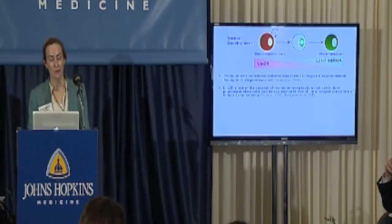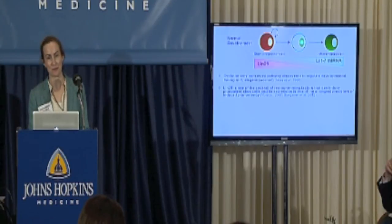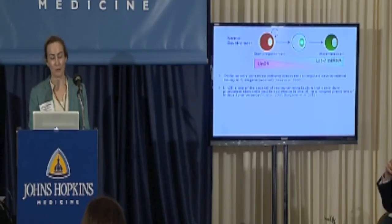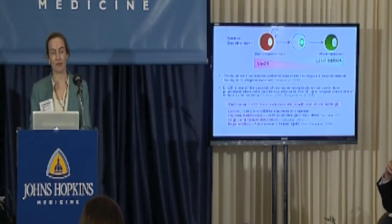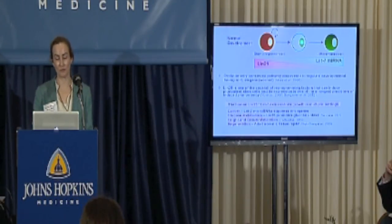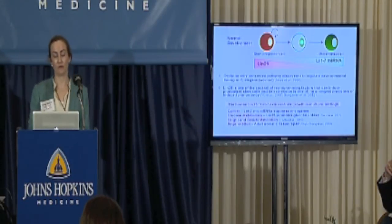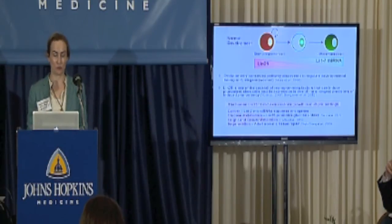LIN28 is also one of a cocktail of factors you can use to reprogram a differentiated cell back into a pluripotent cell — its expression is one of the strongest predictors of whether you will successfully produce a pluripotent cell. In humans, the LIN28-LET7 axis is now known to control growth in multiple settings, and there has been an explosion in our understanding of how this axis is conserved from worms to humans, regulating many growth processes.